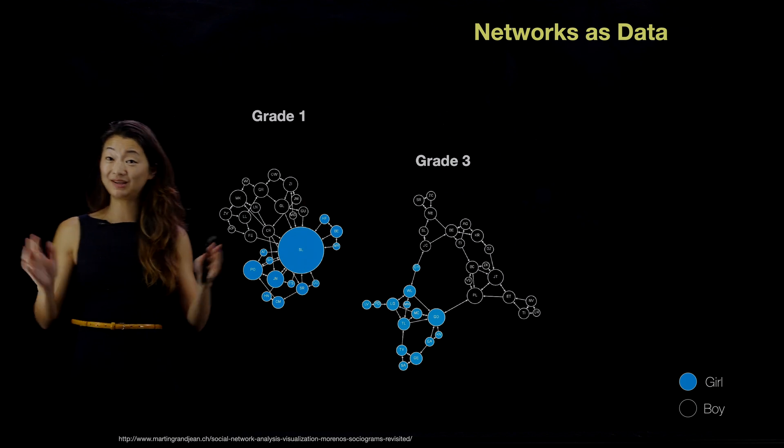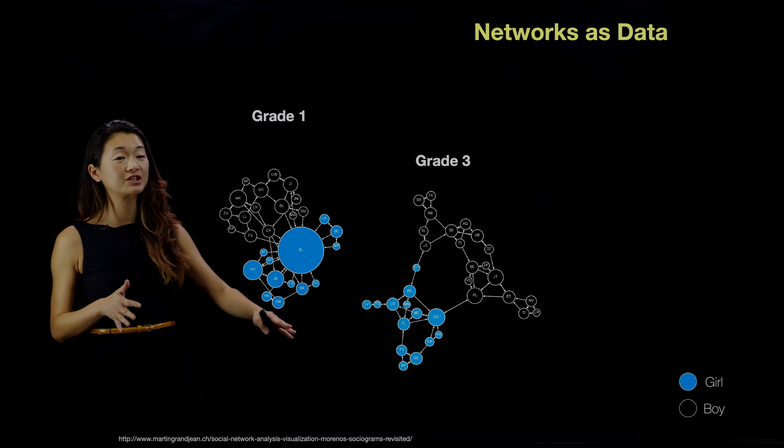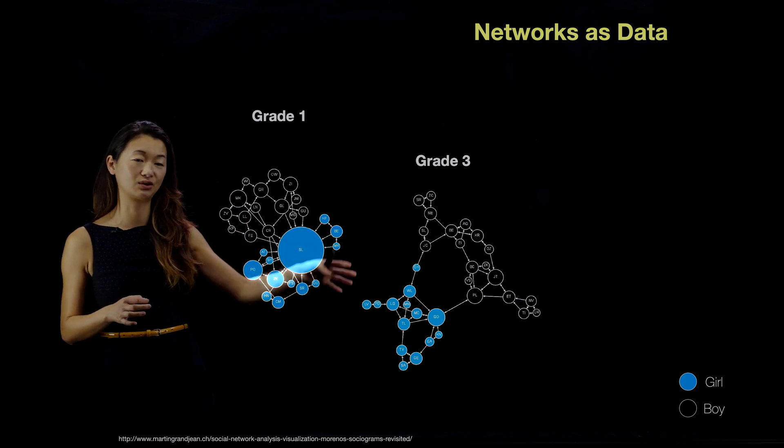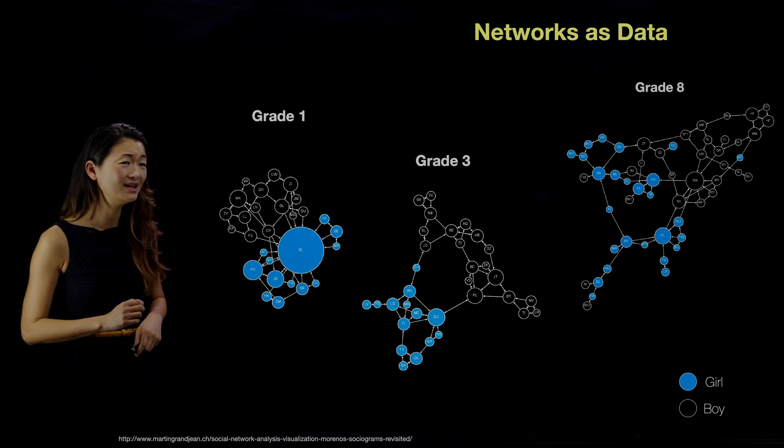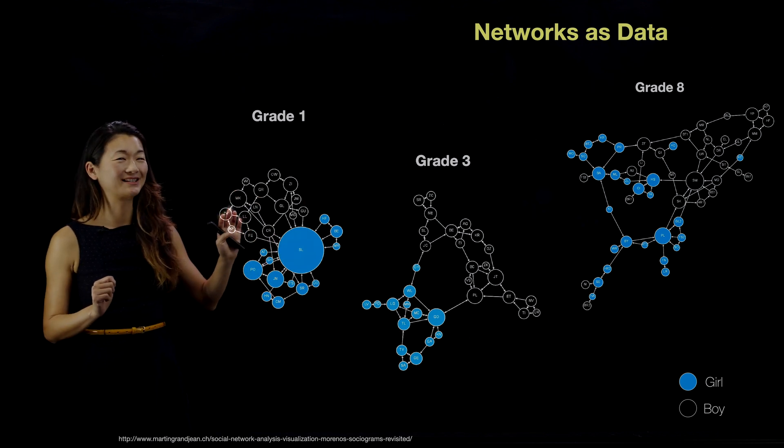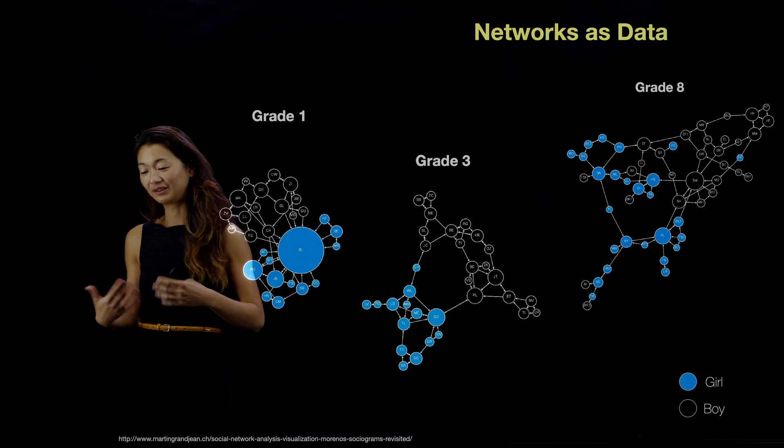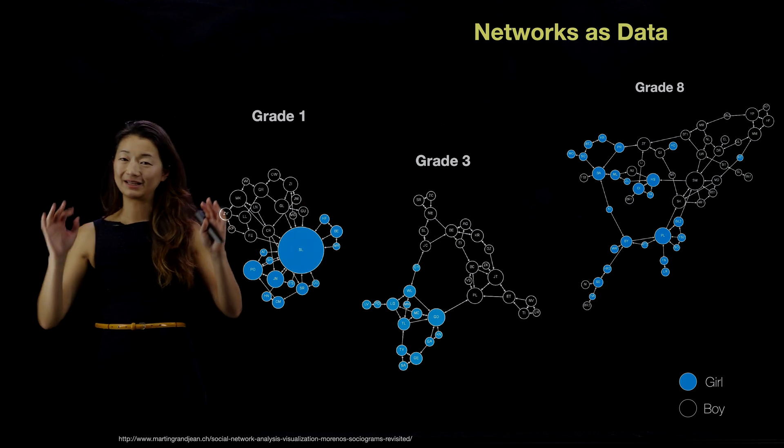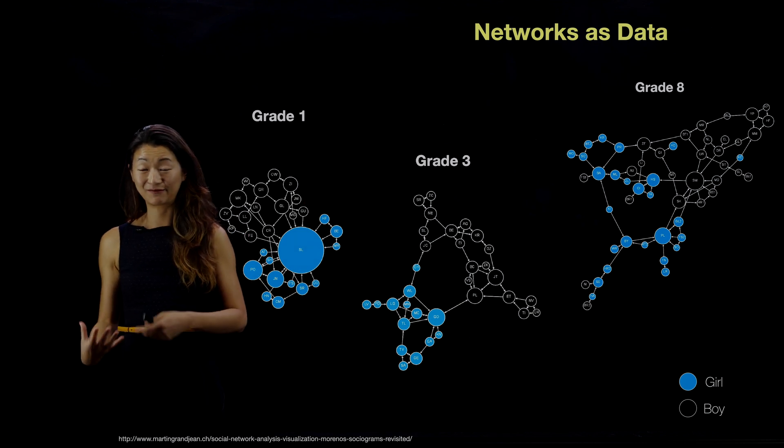By third grade, this has changed somewhat. There's no longer one very popular person. People have formed friendships groups, but there is still this rather stark segregation between the boys and the girls where they want to sit next to their friends of that kind. By grade eight, this has changed dramatically. So by looking at networks as data and then looking at network visualization of this kind, there's a lot of really interesting social dynamics that can be revealed in this way.